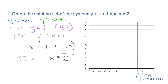Now we're going to graph this. First, we're going to graph our first equation, which passes through (0, 1), which is here, and our second point at (negative 1, 0), which is here. Because we're using a greater than or equal to symbol, we're going to use a solid line to graph our first equation.